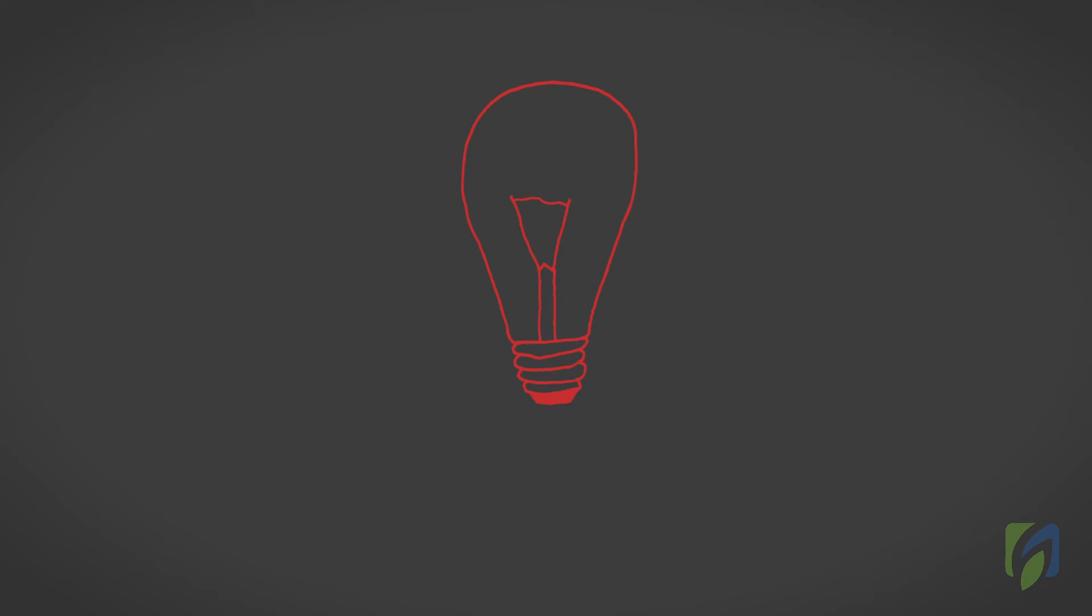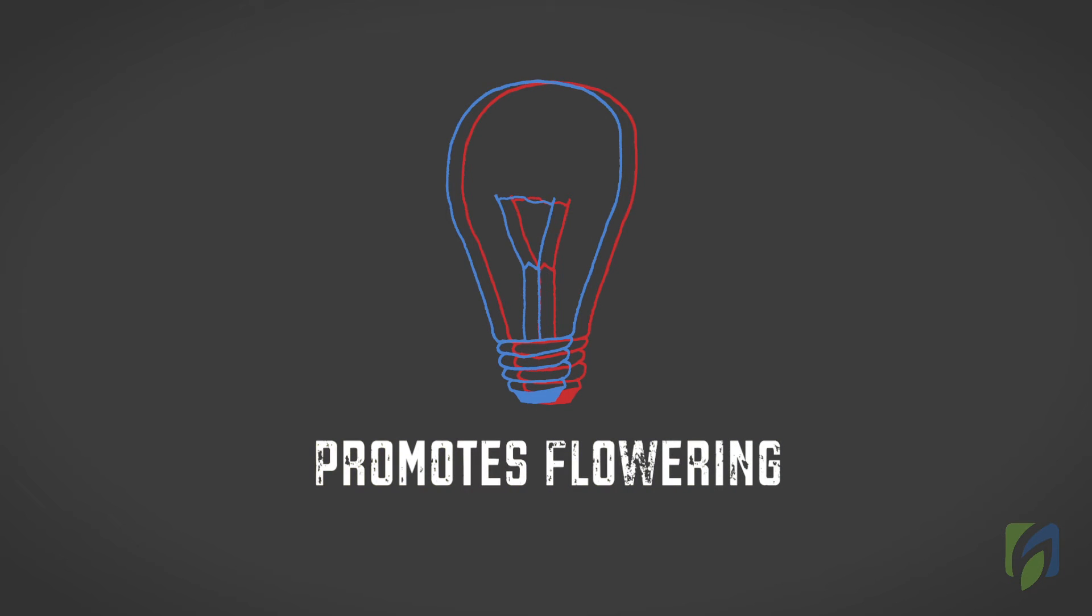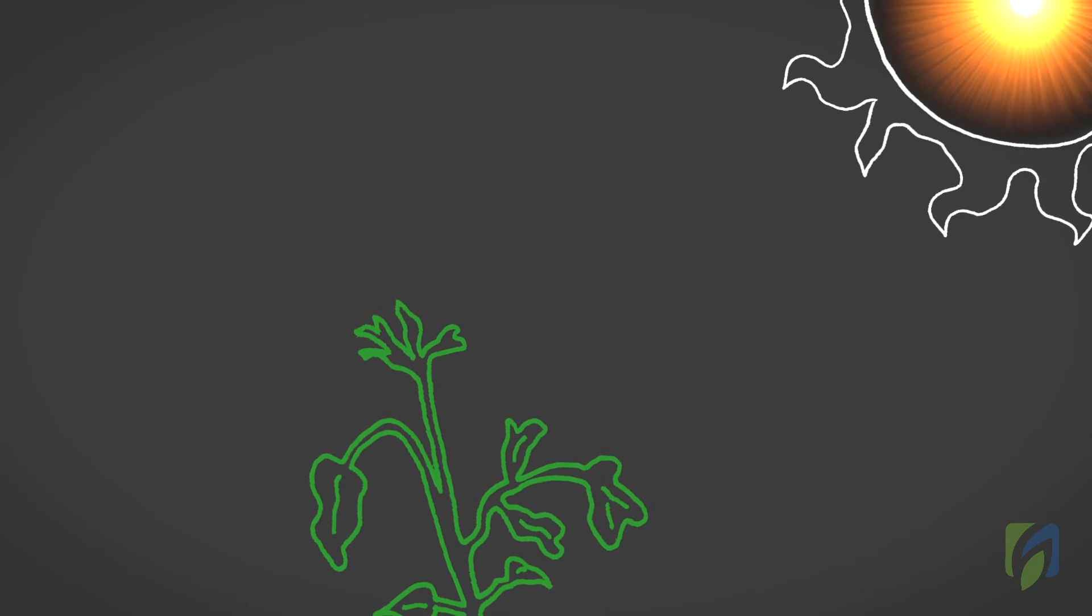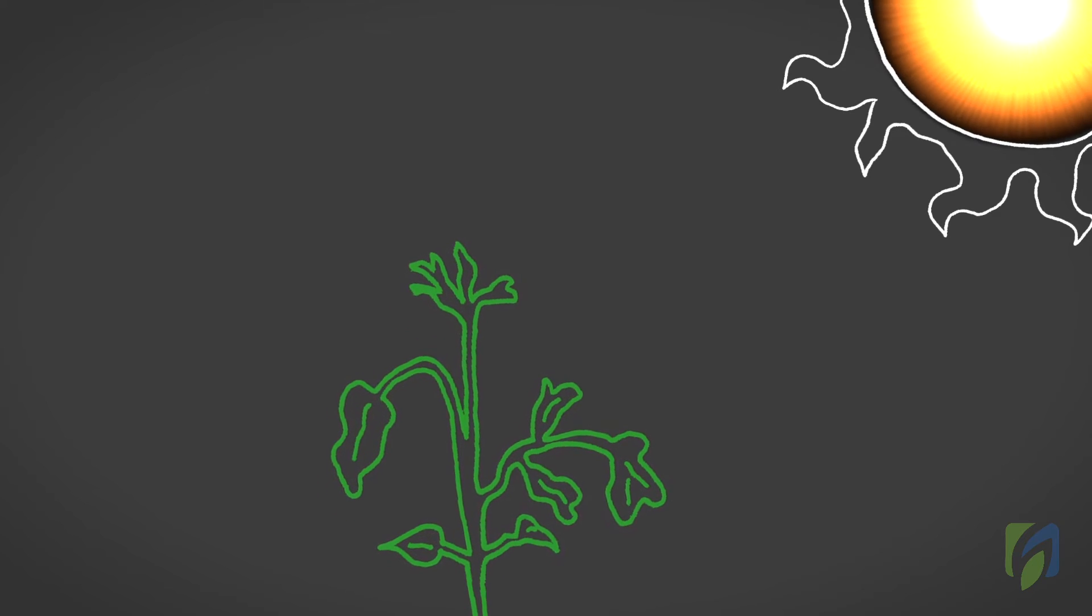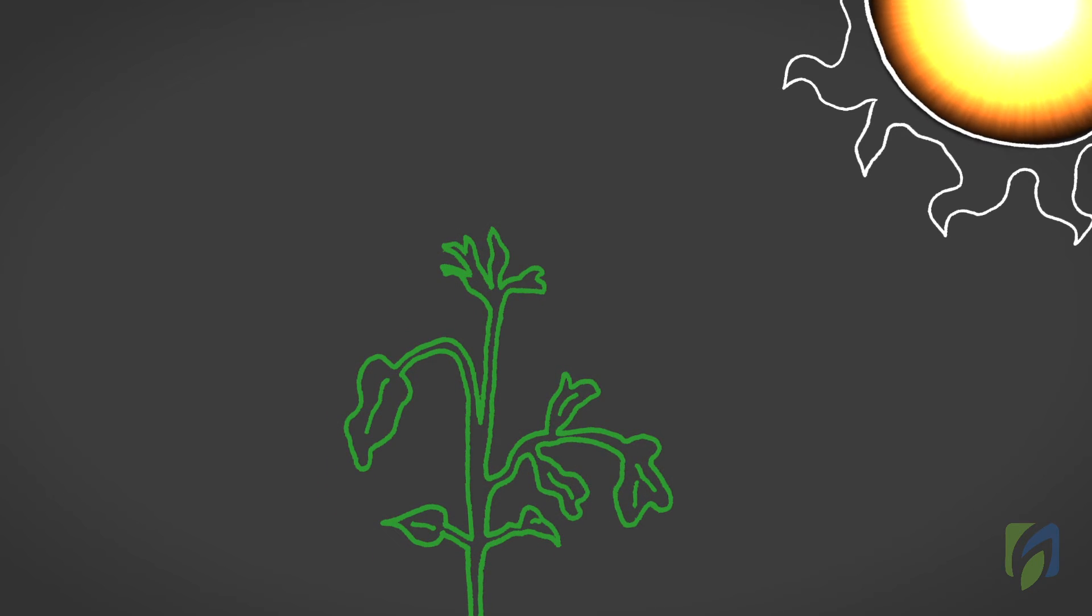Red light, when combined with blue light, promotes flowering. Plants adapt their growth to try to position their stems and leaves so that they receive more desirable light conditions.